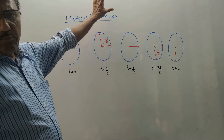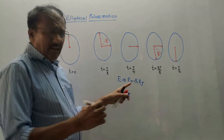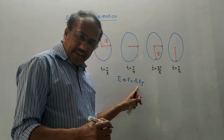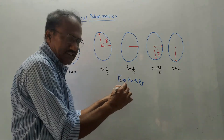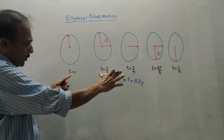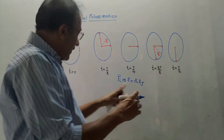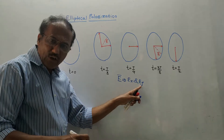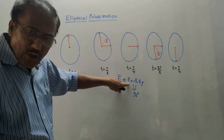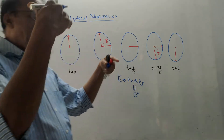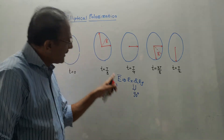The next type is elliptical polarization. Again considering two components E_X and E_Y: in linear polarization we assumed both components were equal, but in elliptical polarization the components are not equal. If you trace the path of the resultant electric field intensity, you get an ellipse. This is shown for different time periods — T=0, T/8, T/4, 3T/8, and T/2. With E_X and E_Y phase shifted by 90°, the maximum value of E_X occurs when E_Y is 0 and vice versa. Unequal amplitudes with a 90° phase shift gives elliptical polarization.